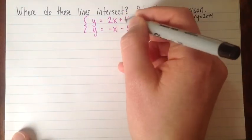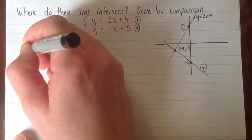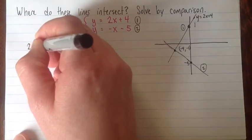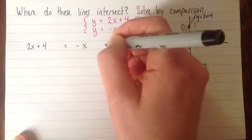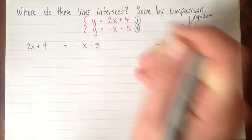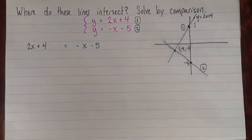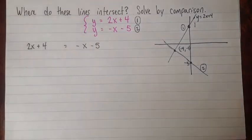So I'm going to set these two right-hand sides equal to each other. So I have 2x plus 4 equals negative x, take away 5.